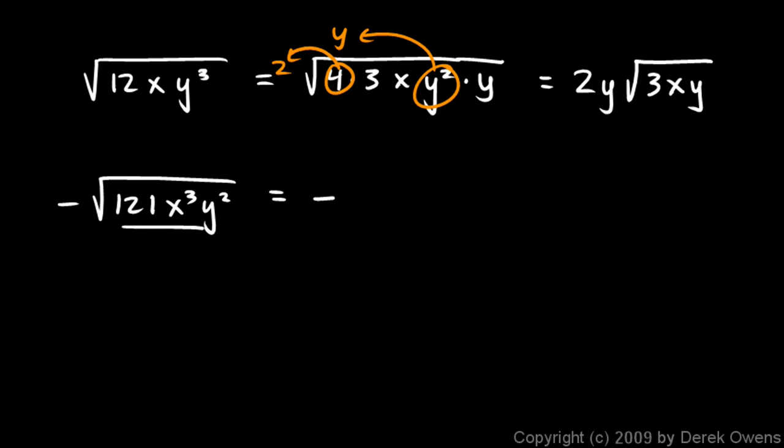So there it is. Now I'll rewrite this to show the intermediate step here. 121 is 11². x³ is x² times x. And then we still have the y² there also. So the answer is going to be negative. That negative sign stays there.